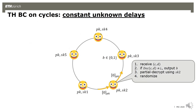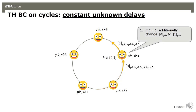In the protocol, when a party receives a ciphertext, he first tries to decrypt. If it decrypts, he outputs the bit — this means the cycle has been traversed and the ciphertext carries his bit. Otherwise, he partially decrypts by shaving off his part from the product key, re-randomizes, and sends it on. Additionally, if the bit is one, he changes the encryption of zero into an encryption of one by squaring the first component. This works for constant delays.